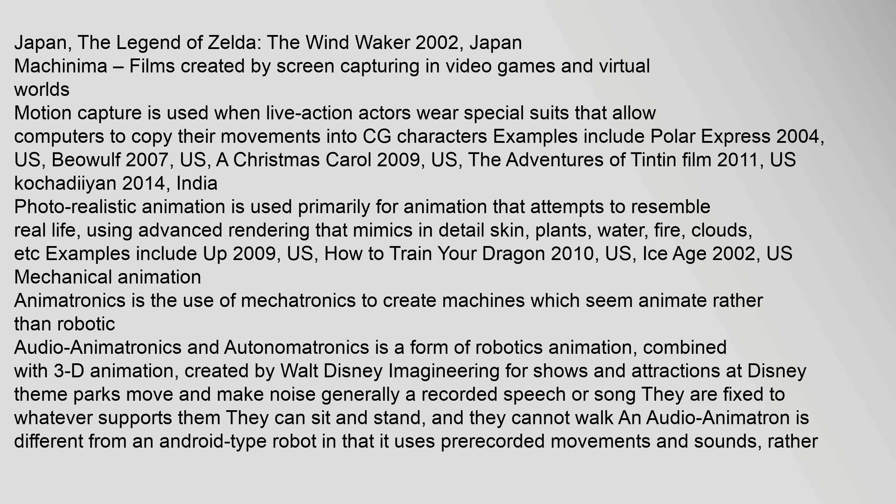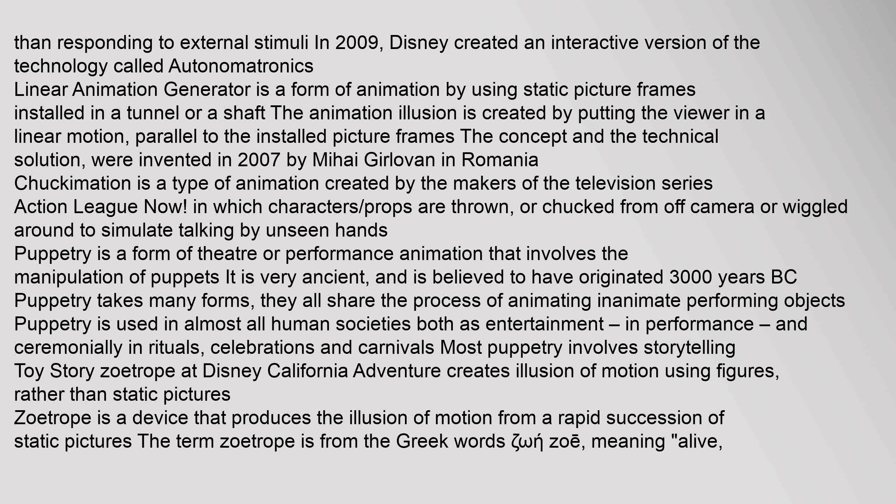Audio-animatrons move and make noise — generally a recorded speech or song — and are fixed to whatever supports them. An audio animatron differs from an android type robot in that it uses pre-recorded movements and sounds rather than responding to external stimuli. In 2009, Disney created an interactive version of the technology called Autonomatronics. A Linear Animation Generator is a form of animation using static picture frames installed in a tunnel or shaft, creating the animation illusion by putting the viewer in a linear motion parallel to the installed picture frames; the concept was invented in 2007 by Mihai Gurlovin in Romania.